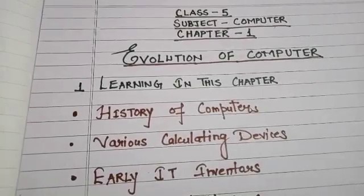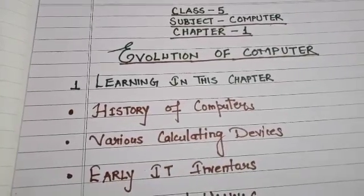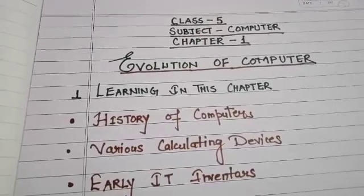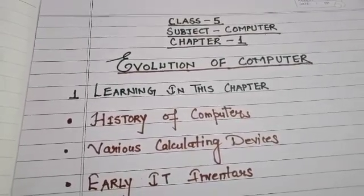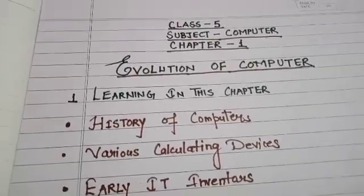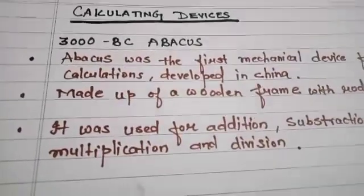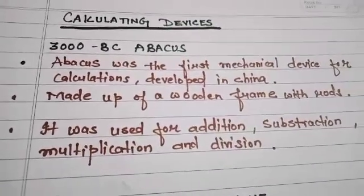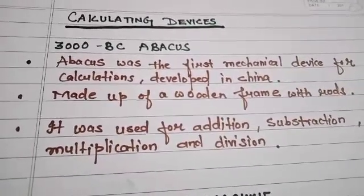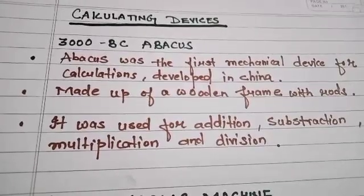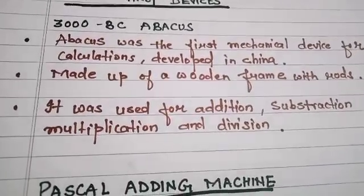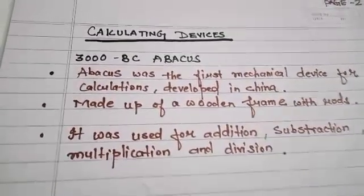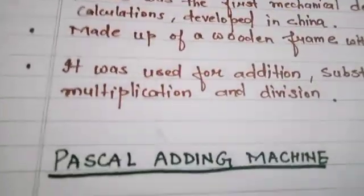The need to keep track of numbers led to the invention of different calculating devices right from Abacus. Many devices were invented leading to the development of computers. The first calculating device in 300 BC, Abacus, was the first mechanical device for calculation developed in China. It is made up of a wooden frame with rods, and was used for addition, subtraction, multiplication and division.